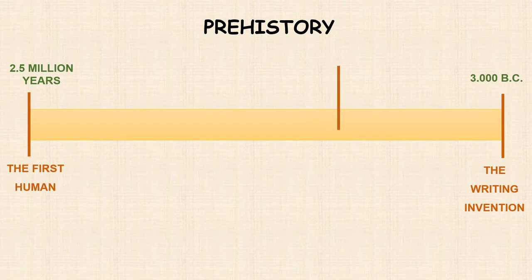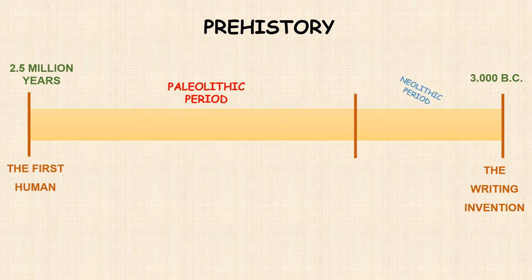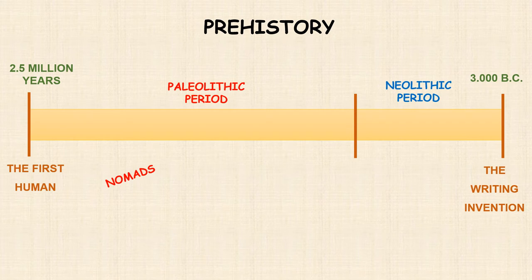Prehistory can be divided into two main periods: the Paleolithic period and the Neolithic period. During the Paleolithic, people were nomads, meaning they didn't live in the same place. Therefore, they were hunters and moved depending on where the food was.